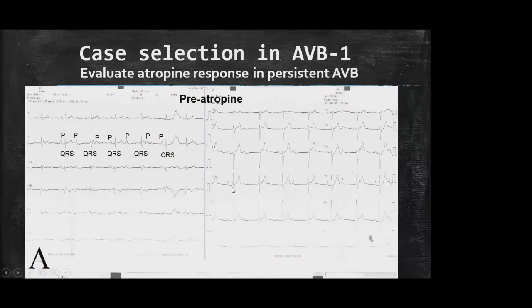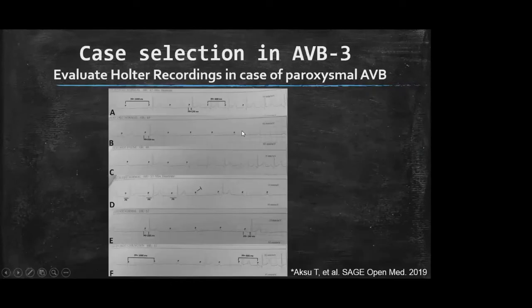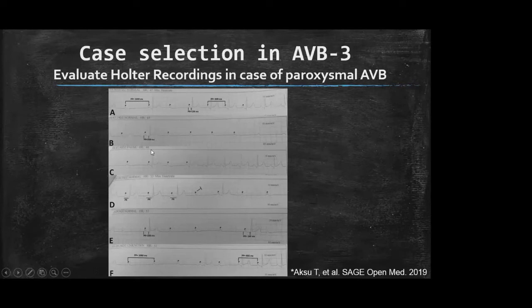For persistent AV block cases, atropine response should also be evaluated. If AV discordance resolves to one-to-one AV conduction after atropine, the persistent AV block is considered functional. For paroxysmal AV block not seen on resting ECG, Holter or loop recorder recordings should be reviewed. If PP prolongation is seen during AV block episodes, or PR prolongation just before high-degree AV block, this indicates functional AV block — two important clues for understanding the functional nature of AV block.